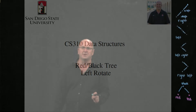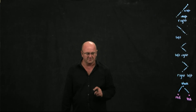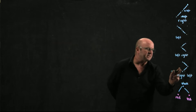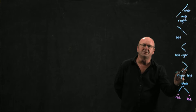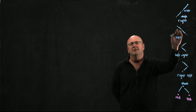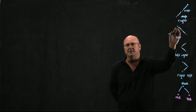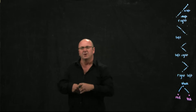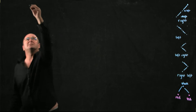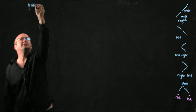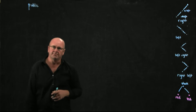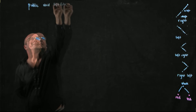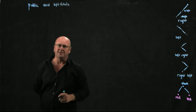Let's take a look at the code for a left rotate. Because we have pointers from node to children and children to parents, we don't need to return anything. We can manipulate our pointers within a single method, so we're going to have a public void leftRotate method.